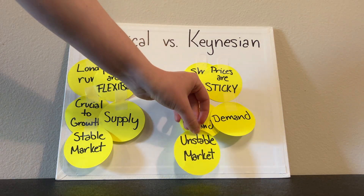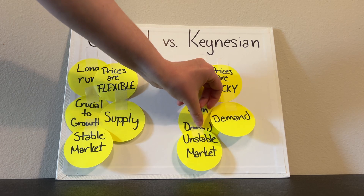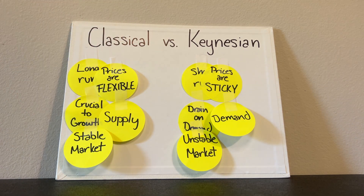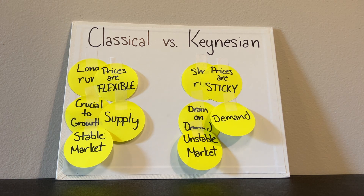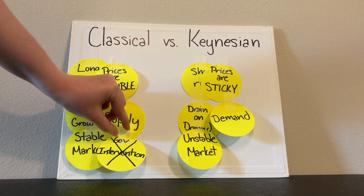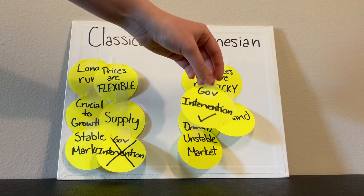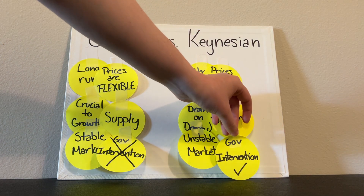Keynesian goes through cyclical unemployment. For government intervention, classical economics believes that government intervention is not necessary, whereas for Keynesian economics, they believe that government intervention is essential.